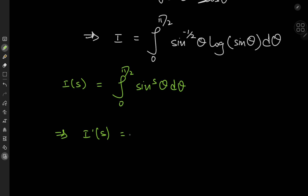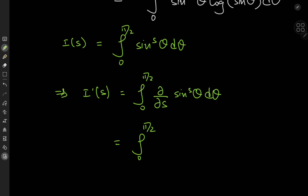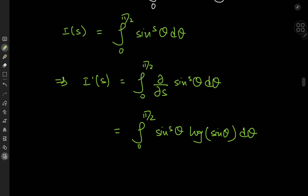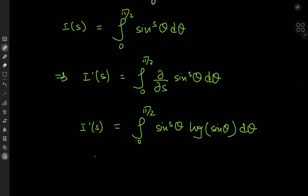That way, when we differentiate with respect to this parameter, we have the integral from 0 to pi by 2 of the partial derivative with respect to s of sine to the s of theta d theta. Since sine theta is treated as a constant with respect to s, we get sine to the s of theta times the logarithm of sine theta. Notice that for the target integral we need s equal to negative 1 half, so I prime of s is this, and the target integral I is actually I prime evaluated at s equal to negative 1 half.